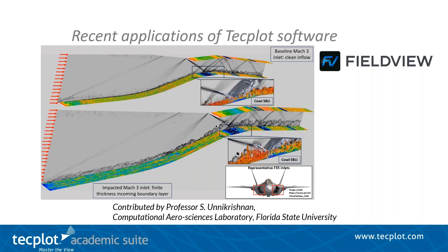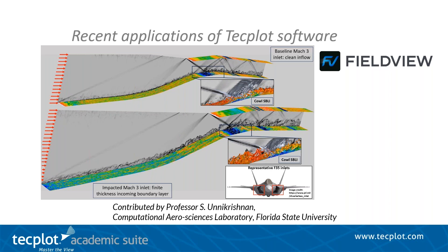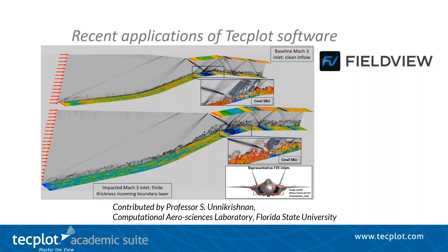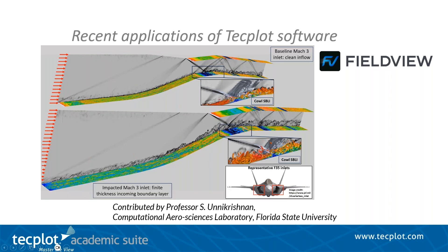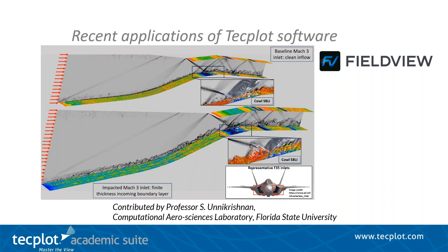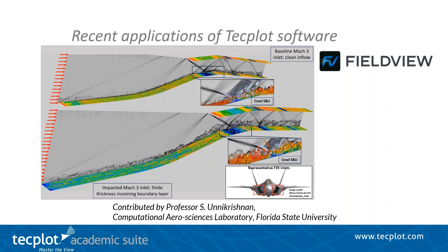Finally, here's an academic research application of FieldView from Florida State University, courtesy of Professor S. Uni Krishnan at the Computational Aerosciences Laboratory. Inlets have an important role in supersonic aircraft — they channel airflow into the engines. The presence of the aircraft fore-body results in undesirable flow features being ingested into the inlet, impacting its efficiency and the safety of the engine. Shown are simulations that model the aerodynamics of a generic supersonic inlet under ideal and impacted conditions, performed as part of a collaborative Office of Naval Research supported effort.